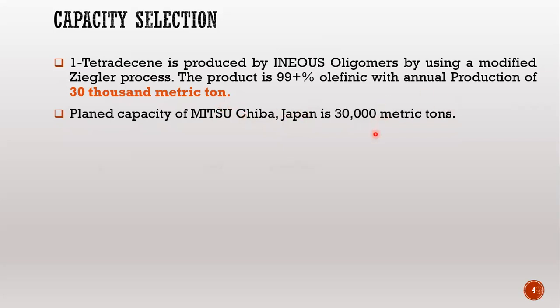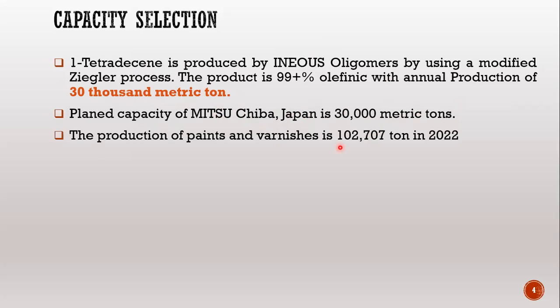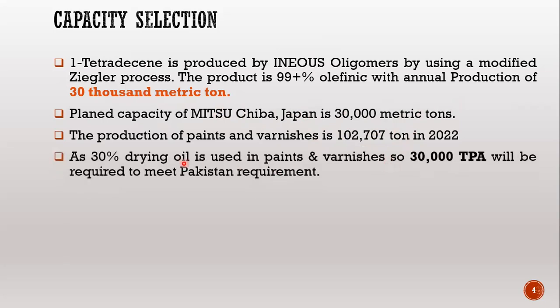The plant capacity, which we have planned for in Japan, is 30,000 megatons. It is used in the production of paints and varnishes. As of the 2022 expected figures, approximately 30% of drying oil is used in paints and varnishes.